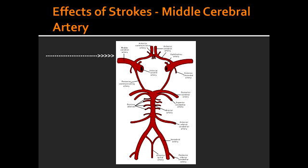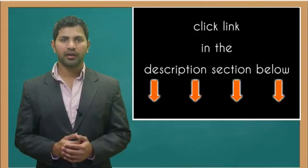In what situation would aphasia happen in a middle cerebral artery stroke? Aphasia can occur if the lesion affects the dominant hemisphere, which is usually the left hemisphere. In a middle cerebral artery stroke that affects the non-dominant side, which is usually the right side, this can cause hemi-neglect.